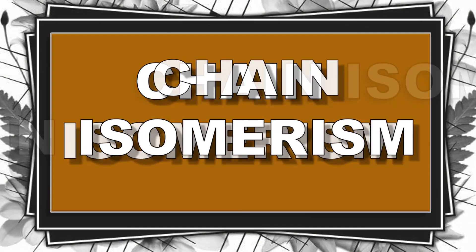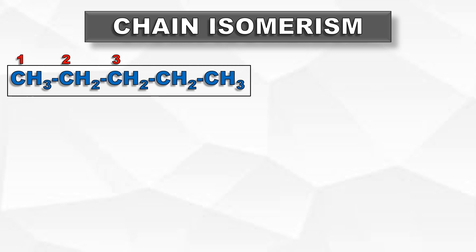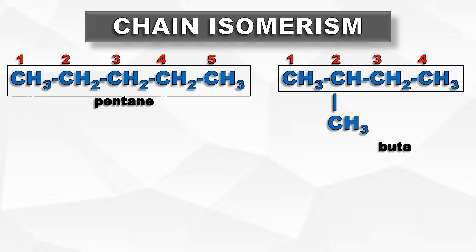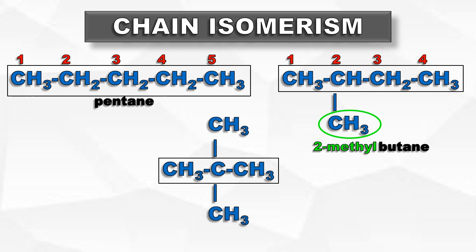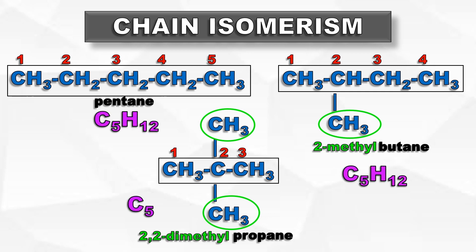The first one is Chain isomerism. Let us consider the following examples. The first one has 5 carbon atoms in the main skeleton — single bonded pentane. The second one has 4 carbon atoms in the skeleton and 1 methyl group at the second position. The third example is a propane chain with 2 methyl groups at the second position. All 3 share the common molecular formula C5H12, but their carbon skeleton changes.